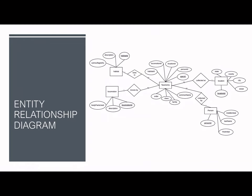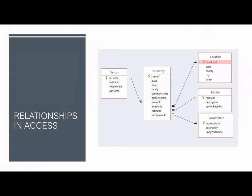The following entity relationship diagram shows the relationship of the five entities and all of their major attributes. The taxonomy entity exists in a many-to-one relationship with all the other entities. This is the display of the relationships within Microsoft Access, connecting the multiple foreign keys held in the taxonomy table with each table.